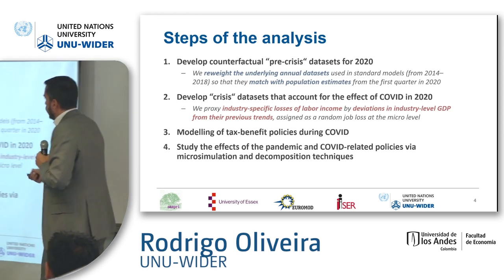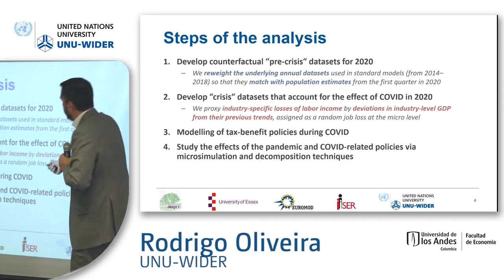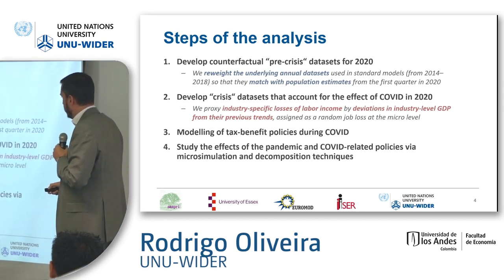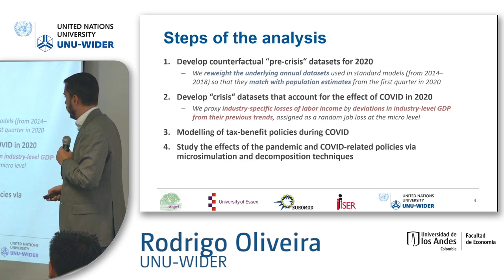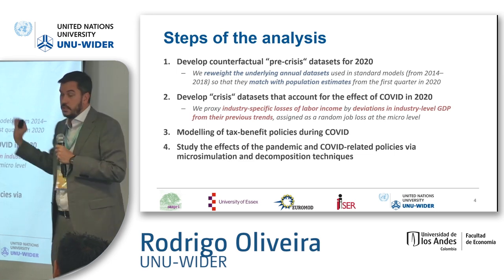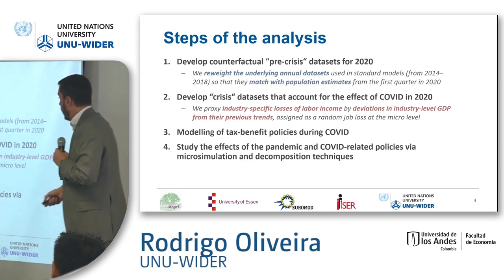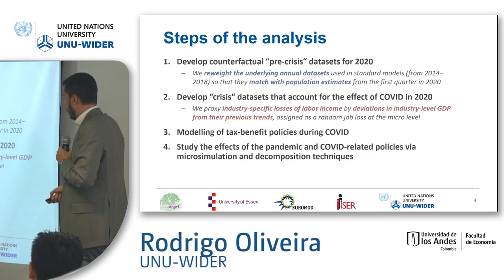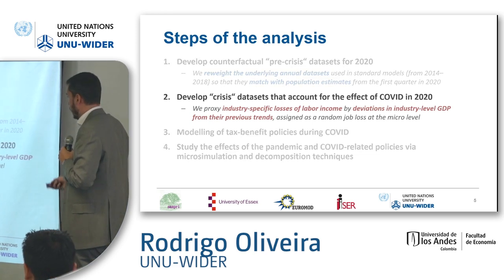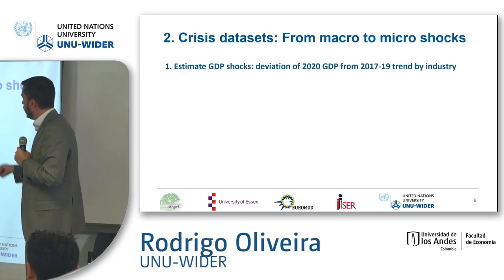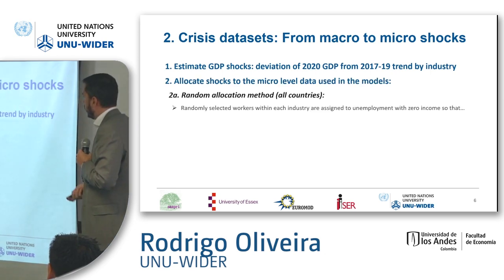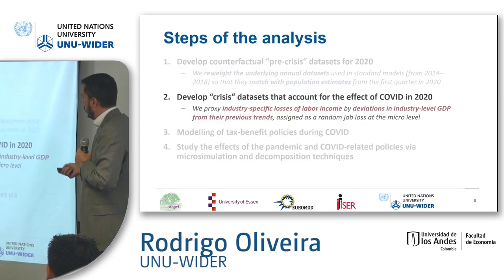Instead of randomly selecting people to lose their job and income, we select people with higher or lower probability of losing income based on the World Bank phone surveys for Uganda. Then we develop this crisis data and model the tax and benefit policies during the coronavirus. This study covers 2020 only, and we also conduct decomposition techniques.